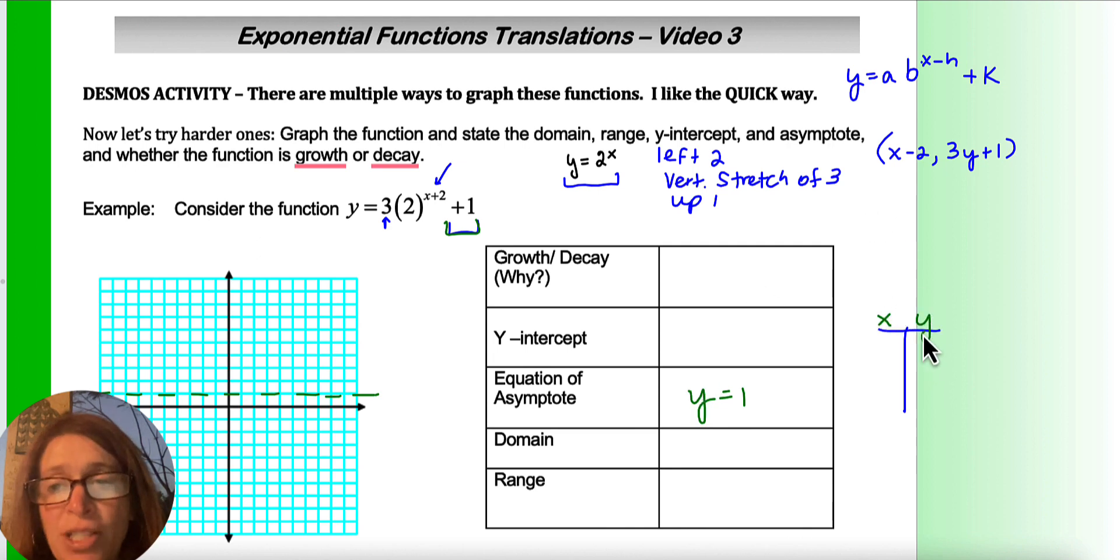My points, I'm just going to pick nice, easy points. I'd love for this to be 0, so in order for that to be 0, so I'd get 2 to the 0, I'd need x to be negative 2. If I do that, negative 2, I get 3 times 2 to the 0 plus 1. 2 to the 0 is 1, 1 times 3 is 3, 3 plus 1 is 4. So I have negative 2, 4.